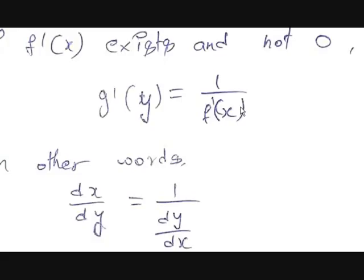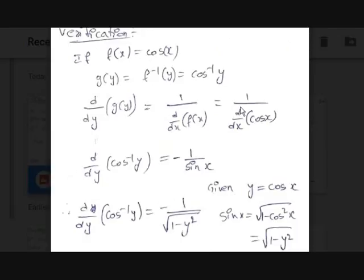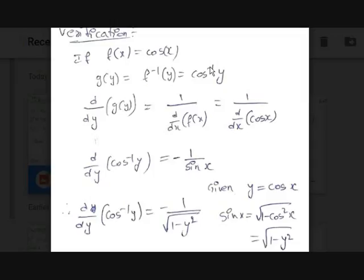We now have the formula, but we need to verify it is correct. Let's verify using cosine. Let f(x) = cos(x). Let g(y) be the inverse of f. The inverse of the cosine function is cos inverse, so g(y) = cos⁻¹(y). We need to differentiate g(y), i.e., differentiate cos⁻¹(y). We know the formula for the derivative of cos⁻¹(y): it is −1 / √(1 − y²).